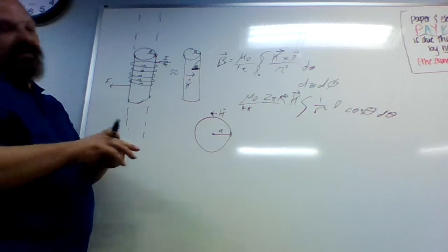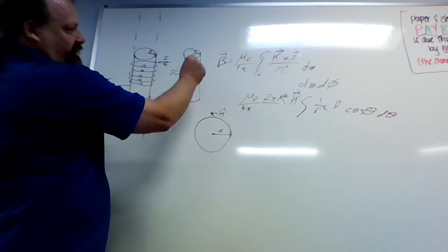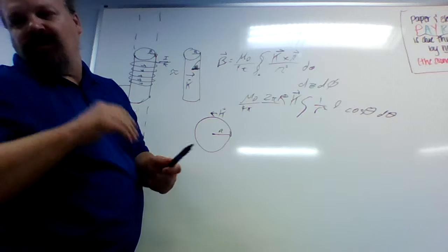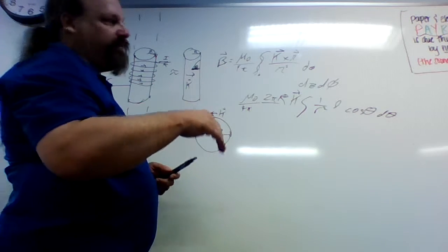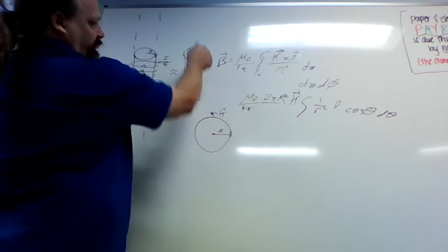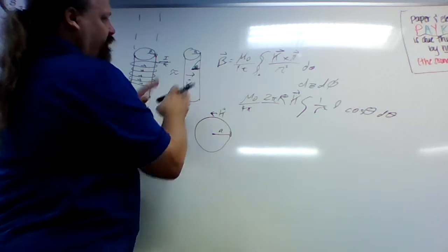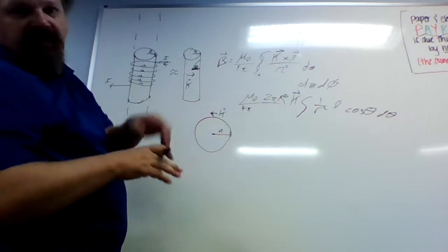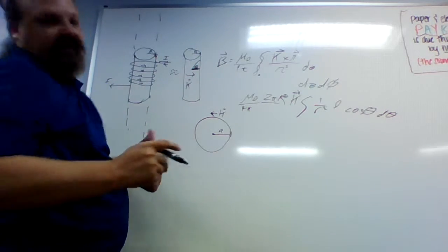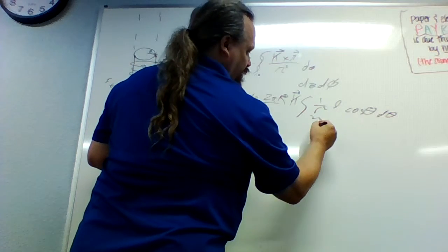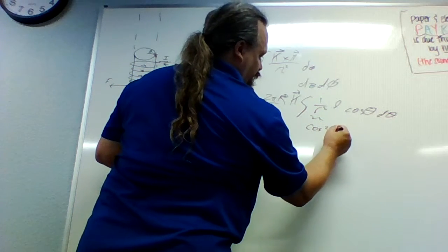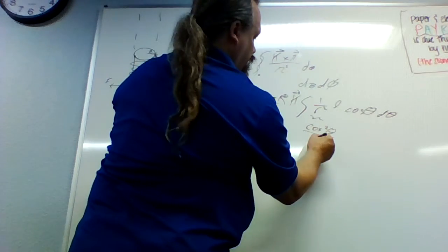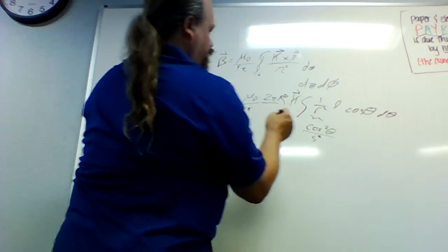And of course we only care about what is perpendicular, like the z-hat direction, because whatever is from the other direction will balance from symmetry from the other part. So this part here becomes cosine squared theta over s squared.